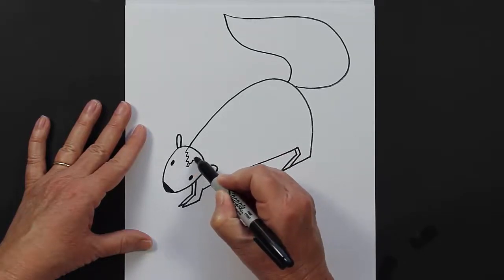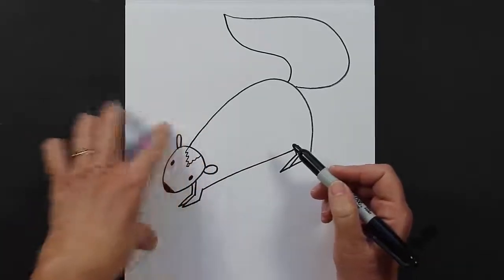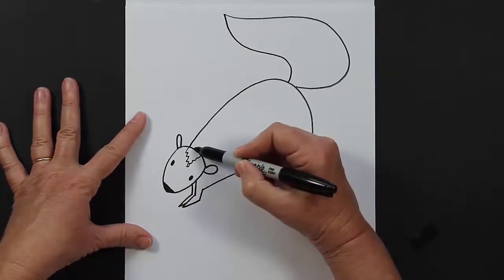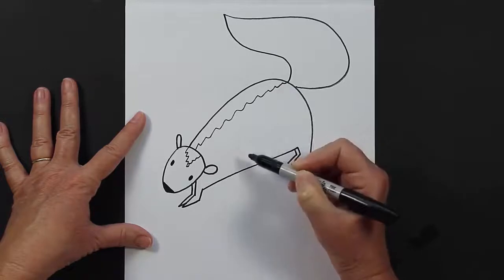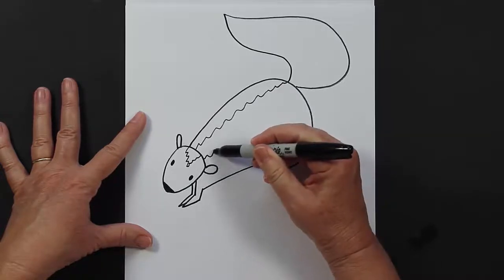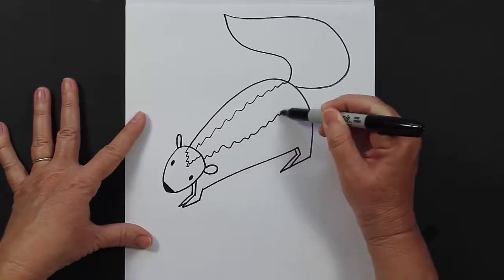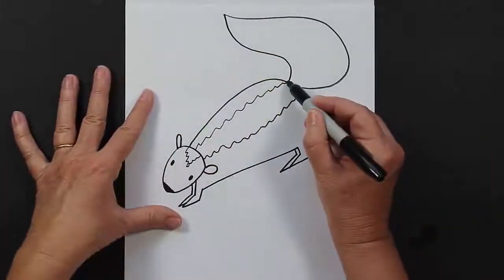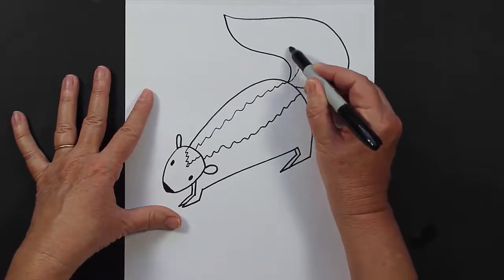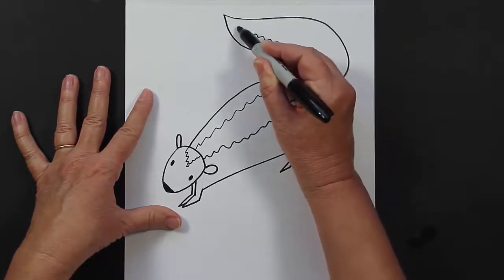Basically it's a zigzag line, so ziggy zaggy, ziggy zaggy, and then coming down his back as well. And then of course he needs a zigzag line on his tail all the way to the tip.